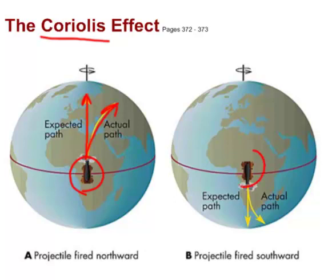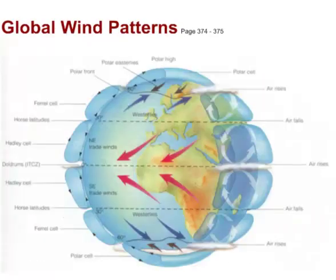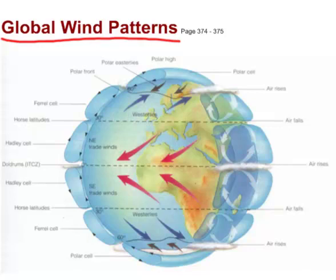If you pointed the cannon southward, it wouldn't go straight either, because the planet is spinning — it's like being on a merry-go-round. The path of the cannonball would be deflected counterclockwise. Put that all together on a whole planet with its atmosphere and you get these incredible global wind patterns that are fairly well established in certain zones.